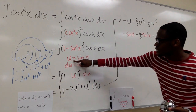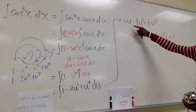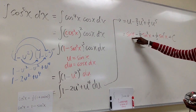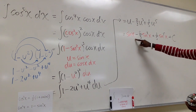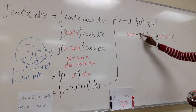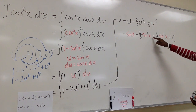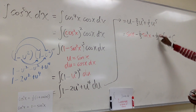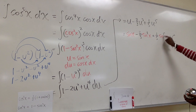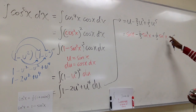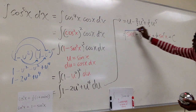Because u equals sine x, we replace u with sine x to return to the x world. Our final answer is: sine x minus 2 over 3 sine cubed x plus 1 over 5 sine to the fifth power x, plus C.